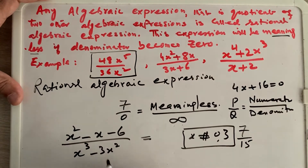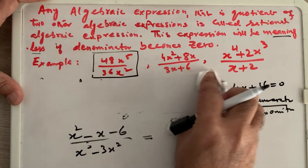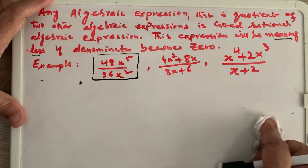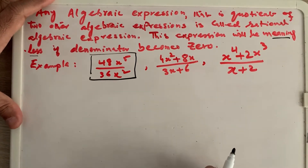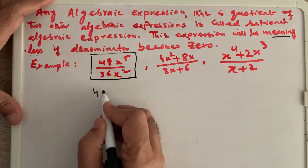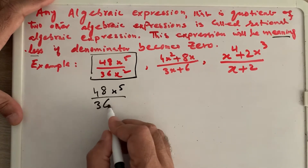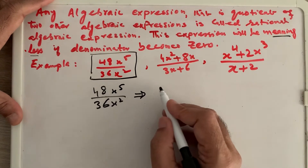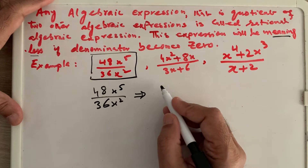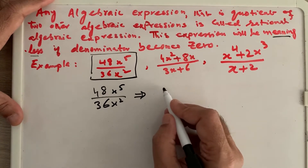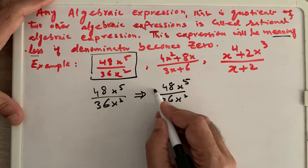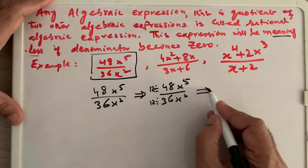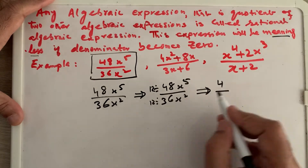To solve these expressions, we solve the numerator and denominator separately and try to reduce to simplest form. Simplest form means if something is common in the numerator and denominator, we can cancel it. For example, 48x⁵ divided by 36x². We can divide both 48 and 36 by 12, giving 12 times 4 is 48 and 12 times 3 is 36.